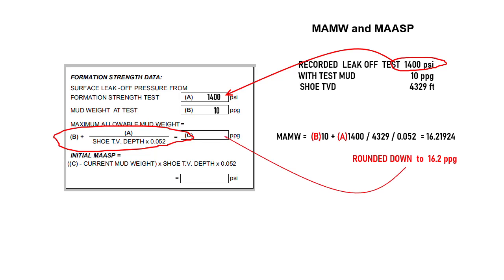We can use the formula to calculate our maximum allowable mud weight, and we get 16.21924. We need to round down this number to one decimal place, so we use only 16.2.